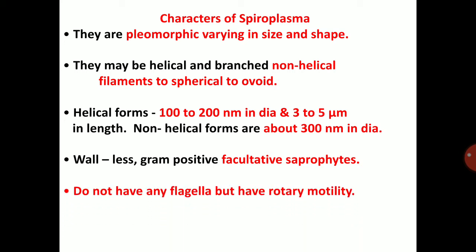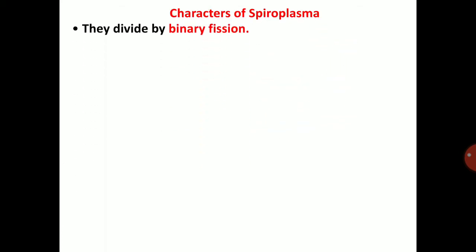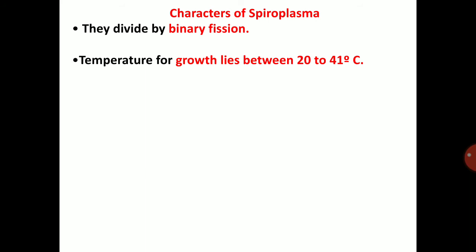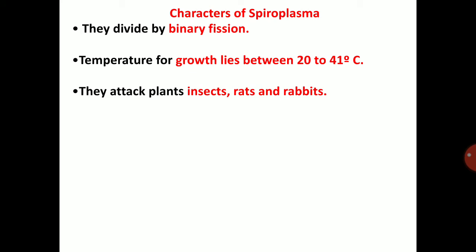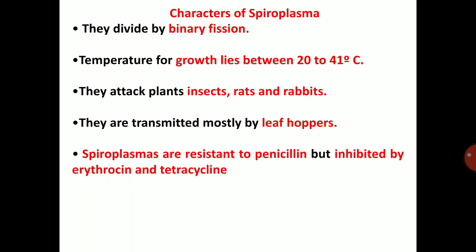Spiroplasma does not have any flagella but has rotary motility. Restricted to phloem sieve tubes. They divide by binary fission. Temperature for growth lies between 22 to 41 degrees Celsius. They attack plants, insects, rats, and rabbits. They are transmitted mostly by leafhoppers. Spiroplasmas are resistant to penicillin but inhibited by erythromycin and tetracycline.